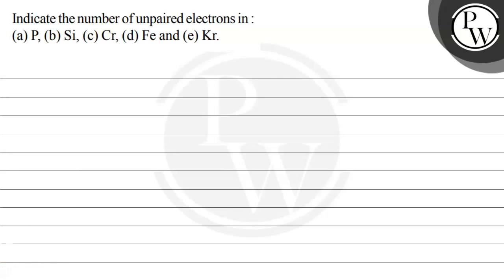Hello, let's read this question. The question says indicate the number of unpaired electrons in these elements. Here we have some elements given. So we will tell the number of unpaired electrons.